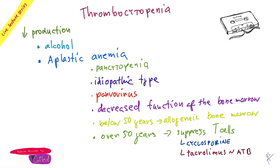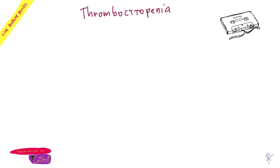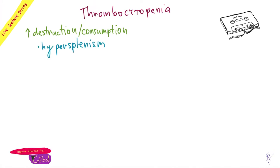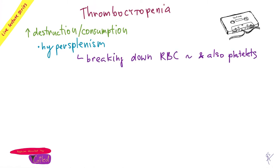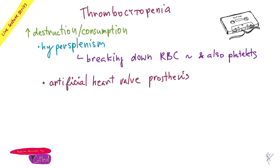Any cause that decreases or blocks production — like HIV — can be put under aplastic anemia depending on context, but you understand there's something with production. On the other side, if there is increased destruction, that also causes thrombocytopenia. Anytime you have hypersplenism, you break down erythrocytes and also platelets — very important diagnostic marker. Any cause of hypersplenism means you're basically destroying platelets too, so they'll be decreased. Also, artificial valves — you're killing erythrocytes mechanically but also killing platelets. Anything artificial in your vascular pipes can break them down.